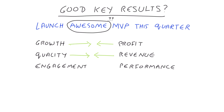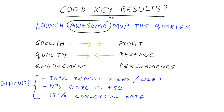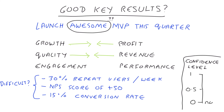So 'launch an awesome MVP in the next quarter' could have key results that look like this: 30% of repeat users in a week, an NPS score of plus 50, and a 15% conversion rate. The final criteria for evaluating your key results is its difficulty level. One great way to assess this is to consider whether you can achieve the OKR on a scale of zero to one and aim for OKRs that have a confidence level of 0.5.